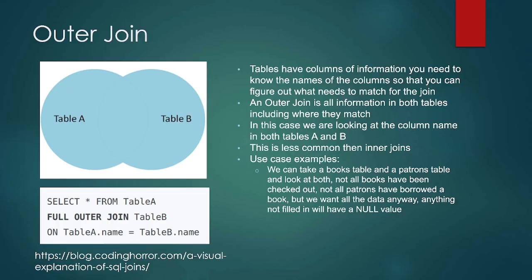An outer join is kind of a 'give me everything.' Tables still have columns and information, and we still need to know the column and table names — we have to spell them correctly. An outer join is all the information in both tables, including where they match. This might be less common just because it is a lot of data. We select everything from table A with a full outer join on table B. Any place that there isn't data will be automatically filled in with a null value. For example, if there was a patron who hasn't checked out any books yet, it would be filled in with null values.